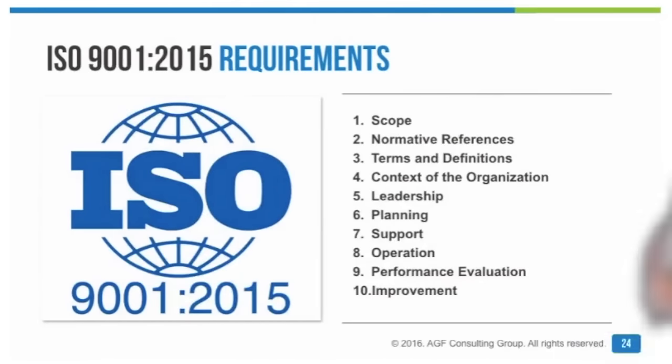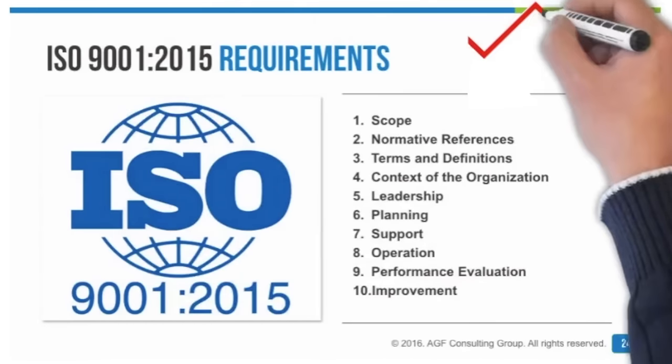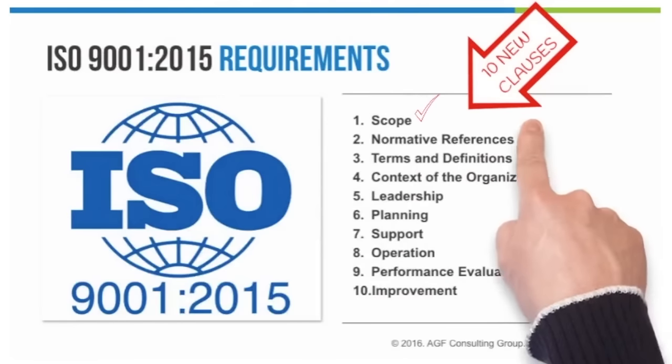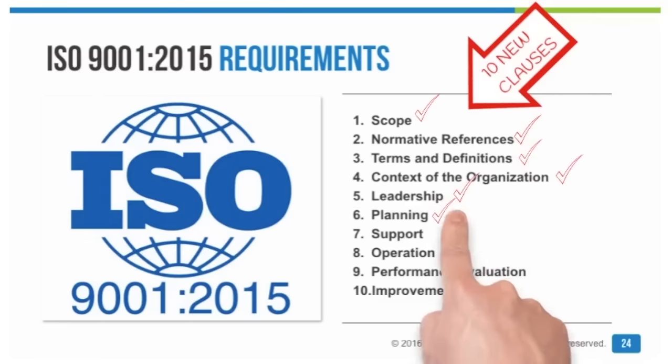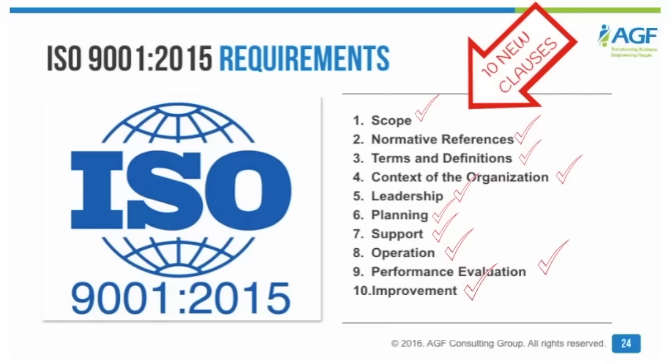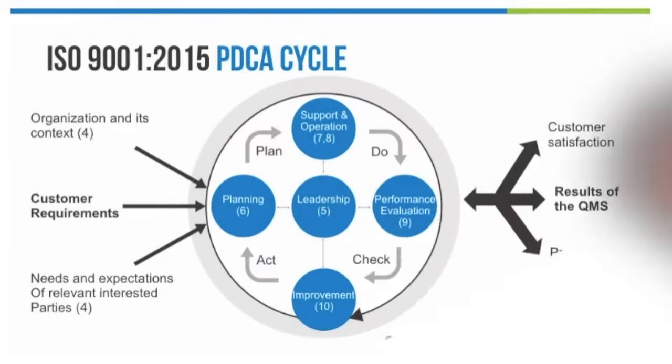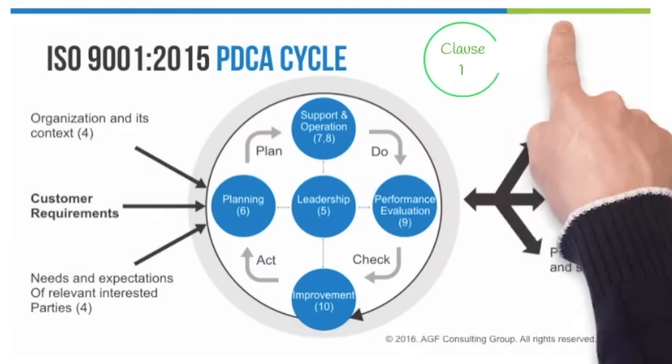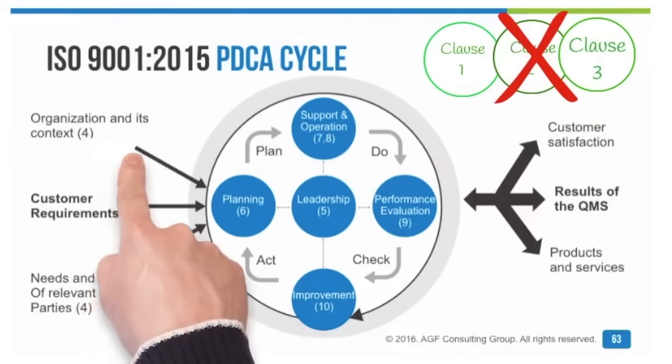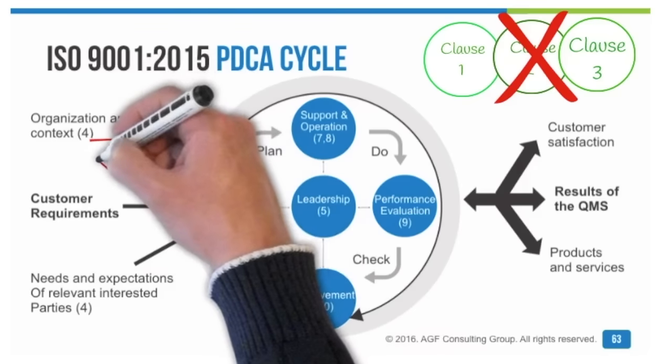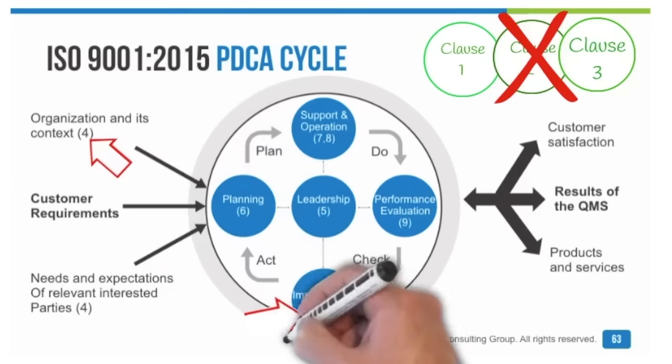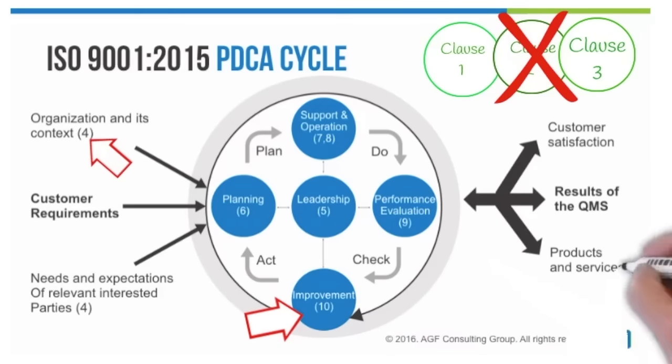First, the new ISO 9001 contains 10 clauses: scope, normative references, terms and definition, context of the organization, leadership, planning, support, operation, performance evaluation, and improvement. Let's bring back the ISO 9001 2015 model again. Clause 1, 2, and 3 are nowhere to be found in this model. This means that the requirements are all contained from Clause 4 up to Clause 10.